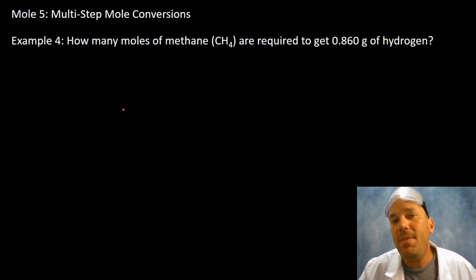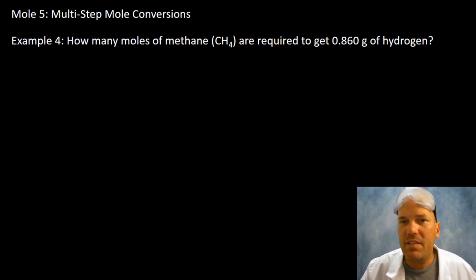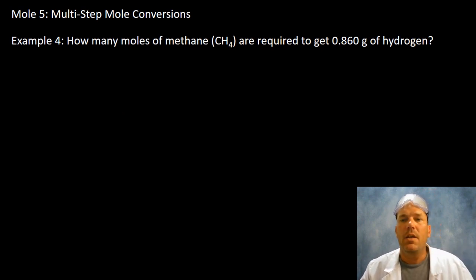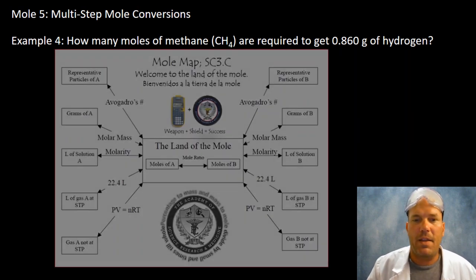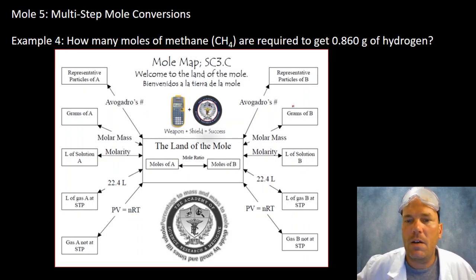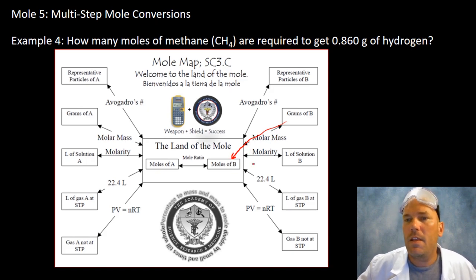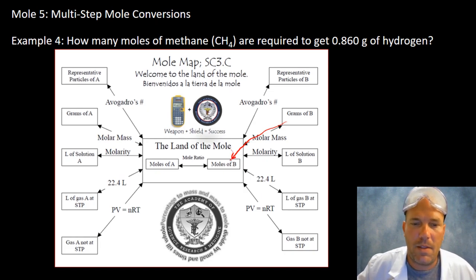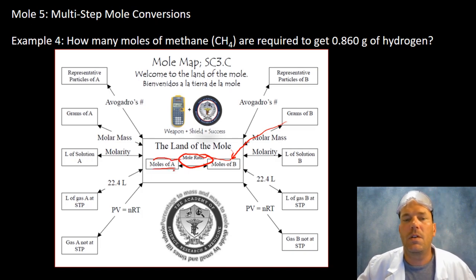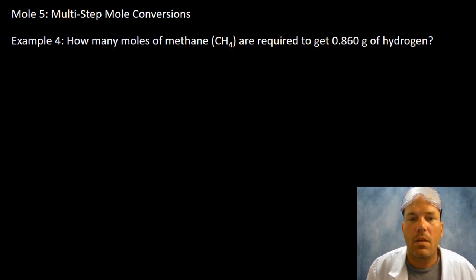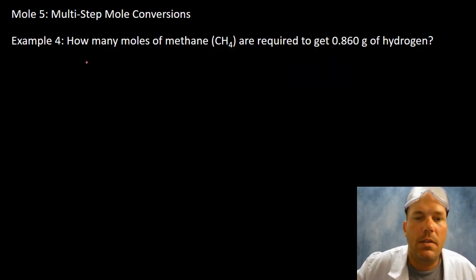Example four: how many moles of methane are required to get 0.860 grams of hydrogen? We're starting with grams of hydrogen and want moles of methane. Using the mole map: we'll use the molar mass of hydrogen to get to moles, then apply the mole ratio to convert to moles of methane.